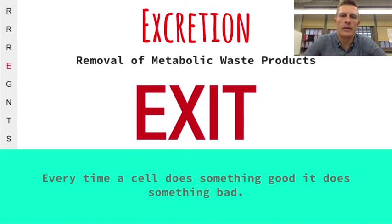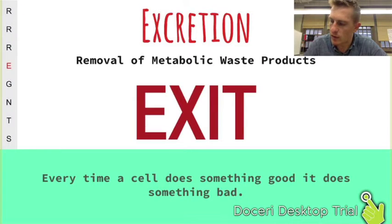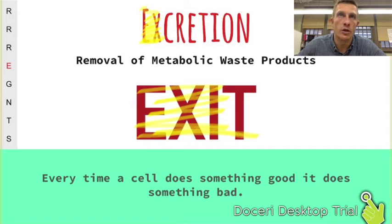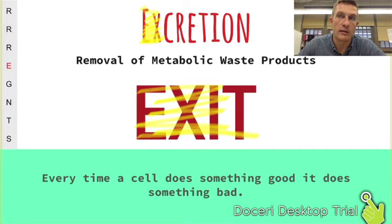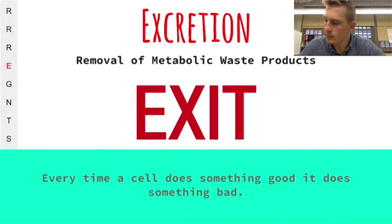Excretion is the life function where any living thing removes metabolic waste products. You can see the word 'exit' in excretion — a good way to remember it. Every time a cell does something good, like turning sugar into ATP, it produces waste like carbon dioxide, which if it builds up is toxic. So we need to remove that waste to maintain homeostasis. The key word for excretion is waste.